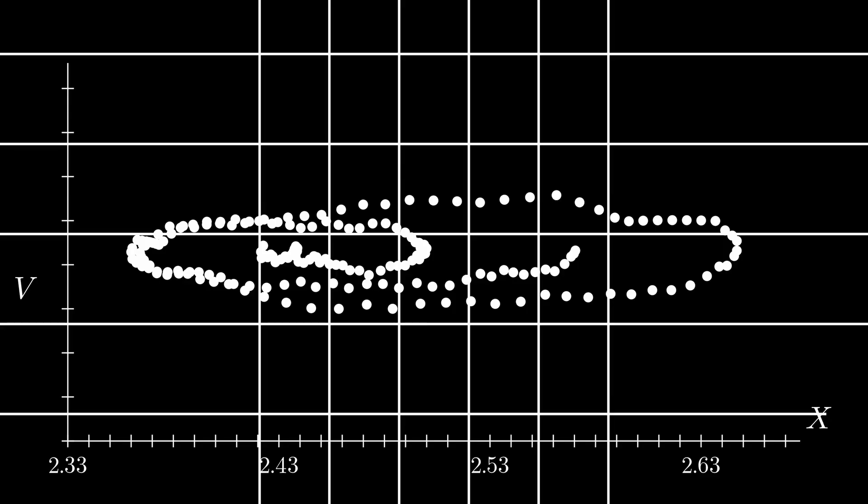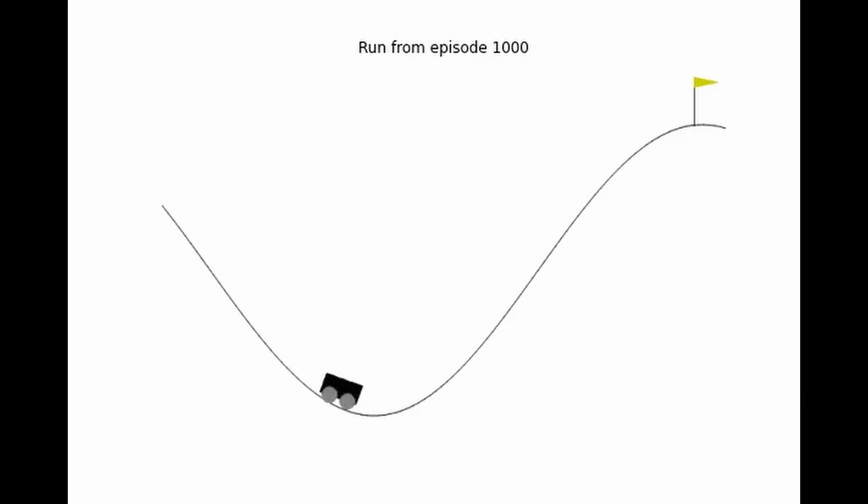We saw in a previous video how tiling can solve the mountain car problem. Using Q-learning in this case was very helpful, because the boundaries were finite and within a certain order of magnitude. For the cart-pole problem, the infinities make tiling obsolete.